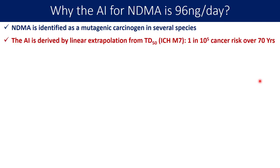The acceptable intake is derived by linear extrapolation from the TD50 value. If you look at the ICH guideline, you will find mention of TD50 to understand the acceptable intake for mutagenic impurities. TD50 is the exposure of a substance or impurity which results in a tumour in 50% of the studied population.